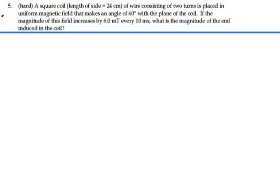Here's problem 315. A square coil length of side 24 centimeters of wire consisting of two turns is placed in a uniform magnetic field that makes an angle of 60 degrees with the plane of the coil. If the magnitude of this field increases by 6 millitesla every 10 milliseconds, what is the magnitude of the EMF induced in the coil?